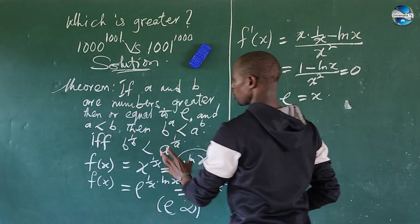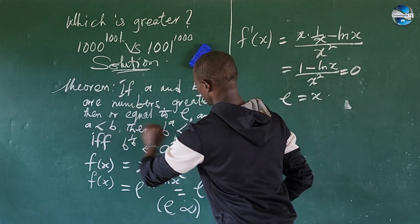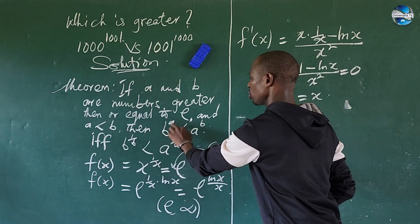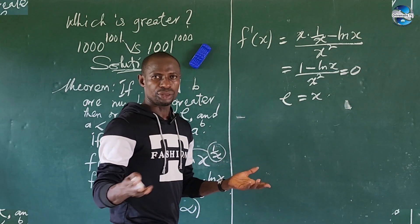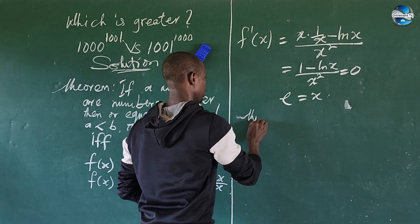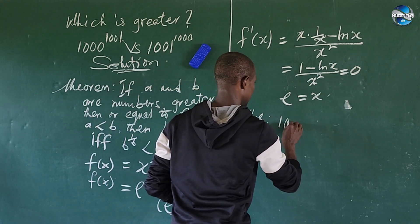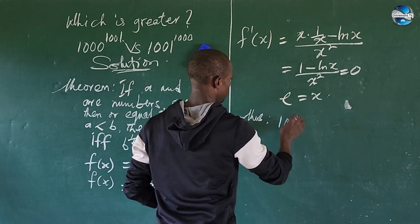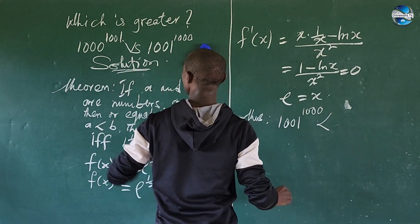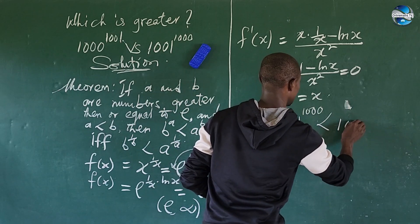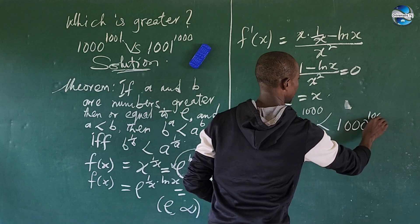So with this proof now, we'll be able to show that here, your A, sorry, where are we? B to the power of A less than A to the power of B is well established. So therefore, we can now say that our 1001 to the power of 1000 is less than our 1000 to the power of 1001.